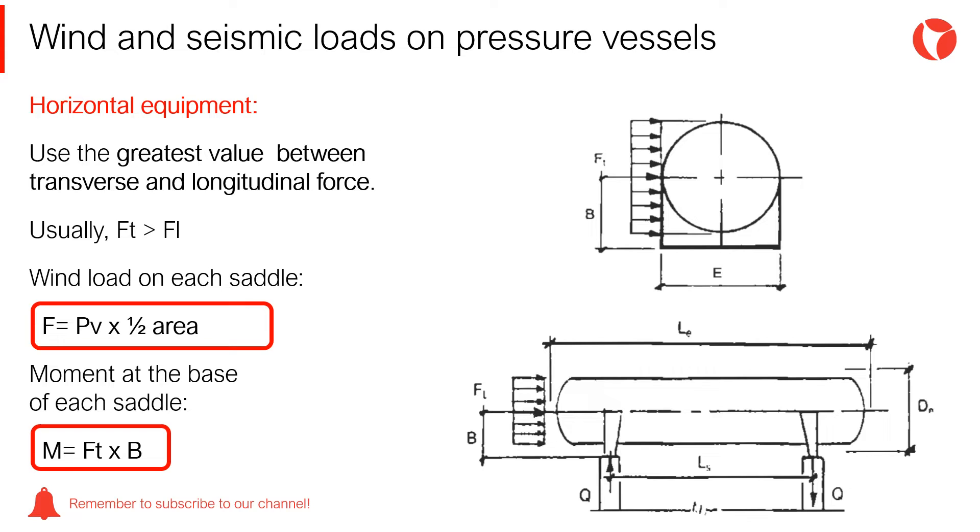The greatest value of each acting wind load needs to be determined for horizontal vessels. In this case, a transverse force and a longitudinal force could be acting on the vessel depending on the wind direction. Usually, since horizontal vessels are longer than wide, the transverse induced force is greater.